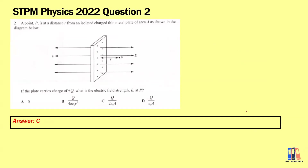Looking at the 2022 question: a point P is at a distance R from an isolated charge on a metal plate of area A. If the plate carries charge positive Q, what is the electric field strength at P? This is a plate charge as discussed, and the answer is C, consistent with the syllabus formula.